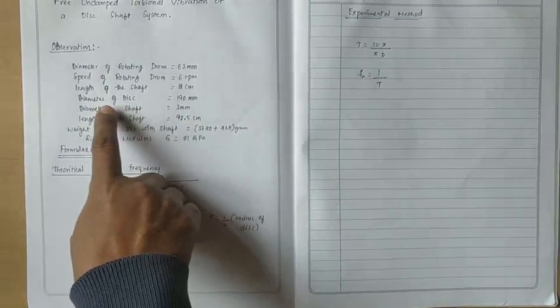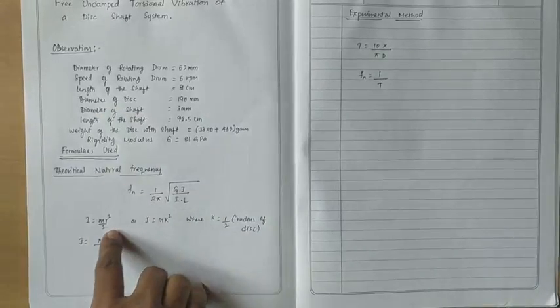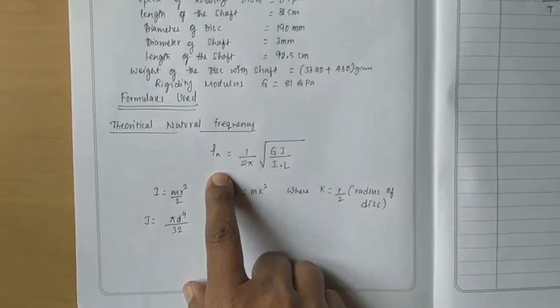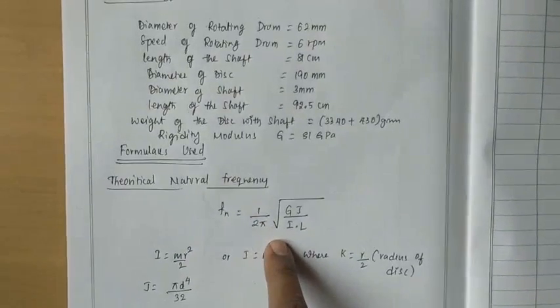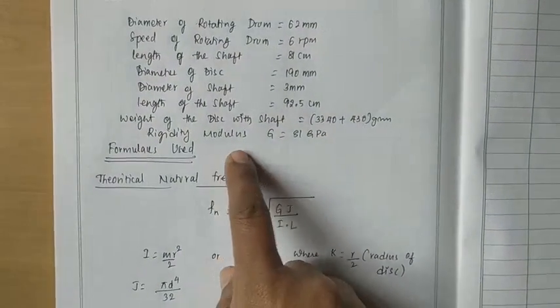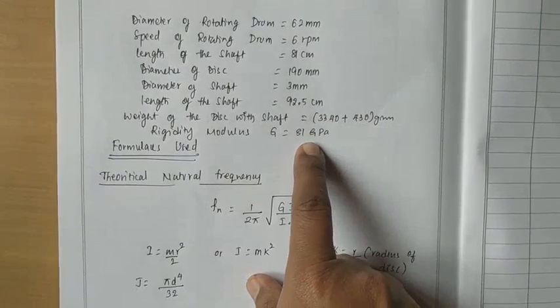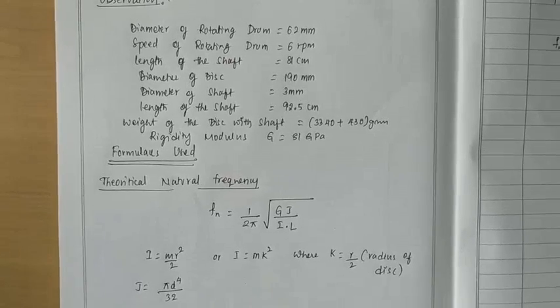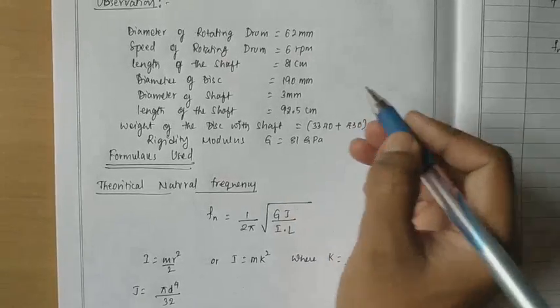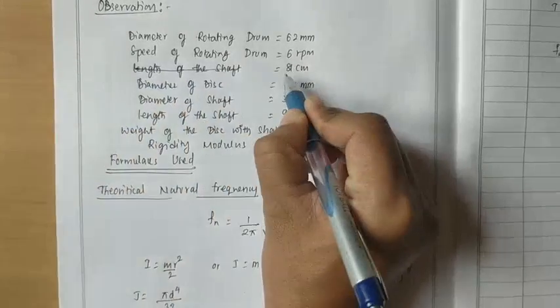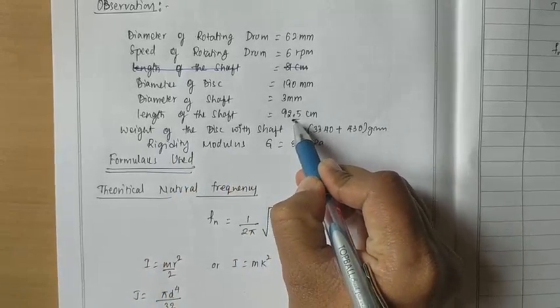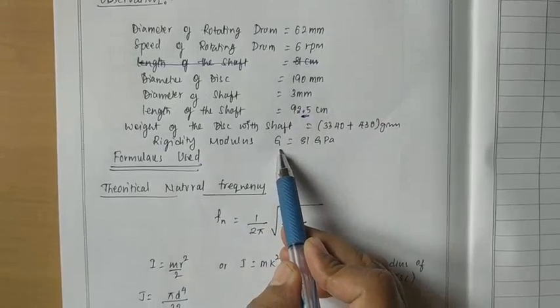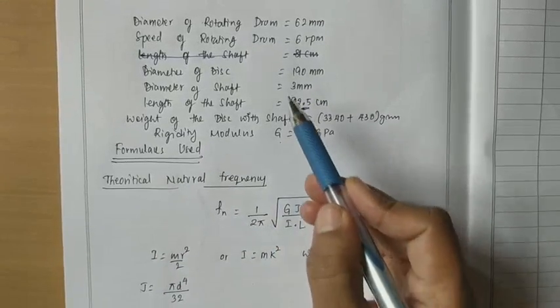So now, to start with, in order to find out the theoretical natural frequency, we are using this formula: Fn is equals to 1 over 2π, square root of Gj by Il. Now, rigidity modulus is 81 GPa. Here, I am sorry, this is the length of the shaft, 92.5 cm.